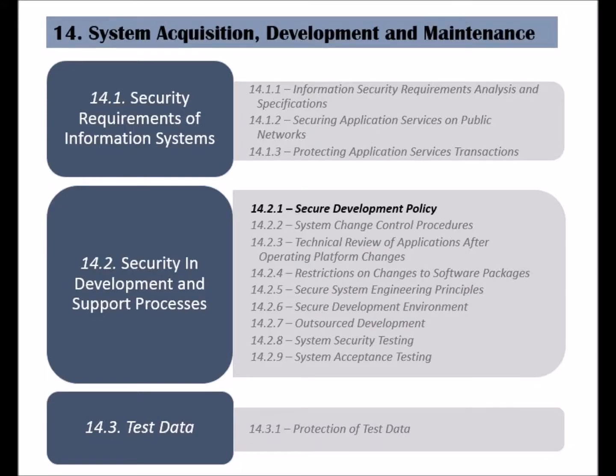The second category of the System Acquisition, Development, and Maintenance clause is called Security in Development and Support Processes. The objective of this category is to ensure that information security is considered and implemented in all phases of an information system's life cycle.